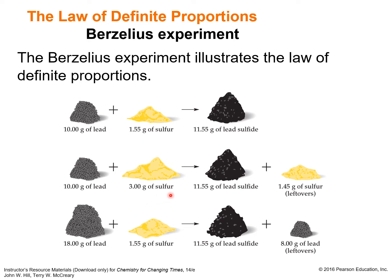He then increased the amount of sulfur to 3 grams and observed that the same amount of lead sulfide — 11.55 grams — was formed, and the extra sulfur was left unused as a leftover. In a third combination, he increased the lead to 18 grams with the original 1.55 grams of sulfur, again producing 11.55 grams of lead sulfide with excess lead collected at the end. This shows that lead sulfide has a definite proportion of lead and sulfur regardless of the source.